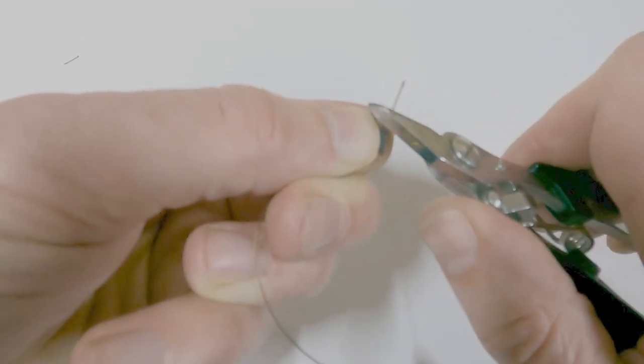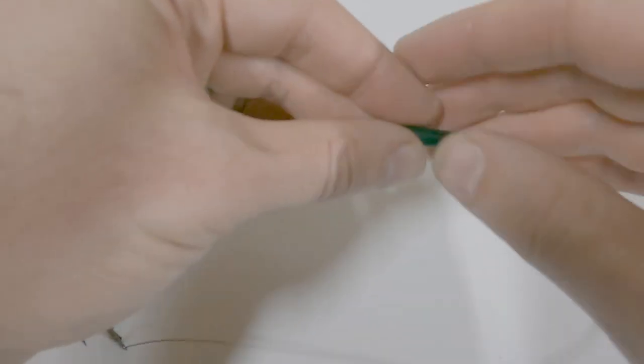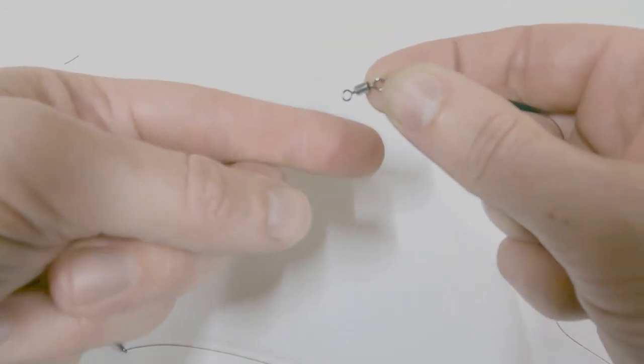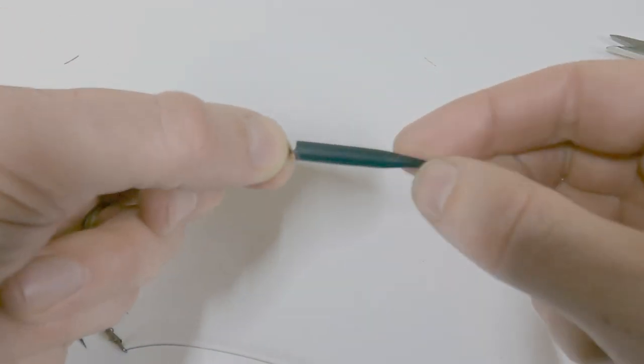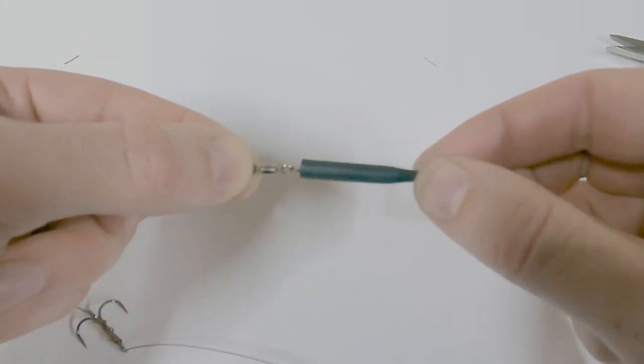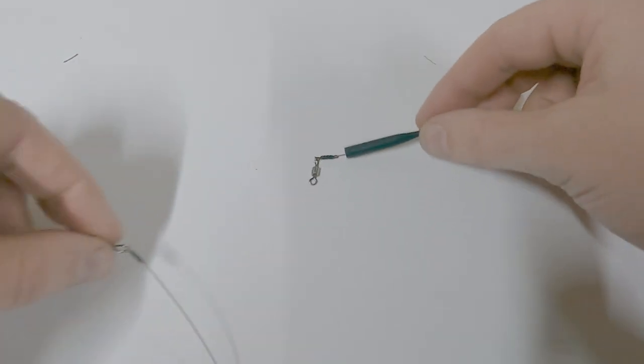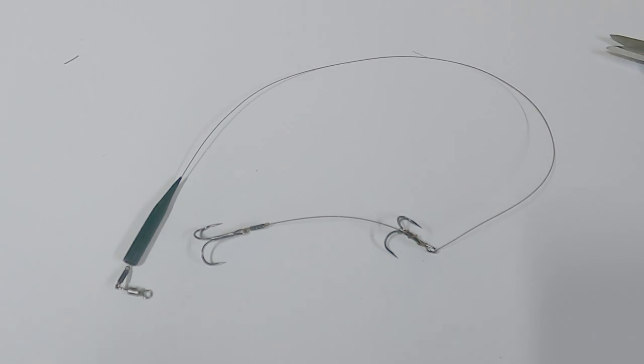Trim that tag end off. That's it. That sleeve, once I've clipped my swivel onto my quick change link which stays on my braid, that sleeve then pushes up to cover that all neat. Helps stop tangles.